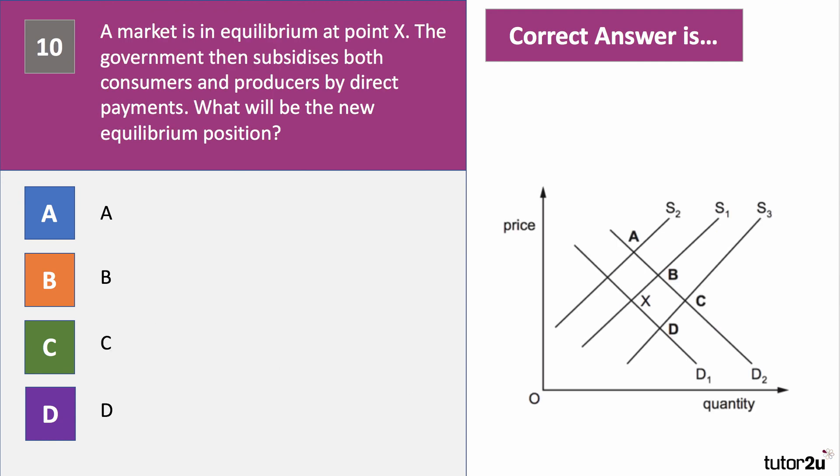One question left. A market is in equilibrium at point X. The government then subsidizes both consumers and producers through direct payments. What is likely to be the new equilibrium position? Press pause for a few seconds and think it through, then press play again.